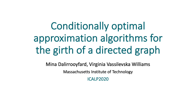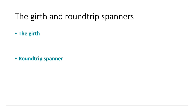Hi, everyone. In this talk, which is a joint work with Virginia Wasilewska-Williams, I'm going to talk about computing girth and spanners in directed graphs. Girth is one of the most fundamental graph parameters, and so its computation has been studied for a long time. Round-trip spanners, which are sparse subgraphs of the original graph, are very useful in a lot of settings and are very related to the girth.